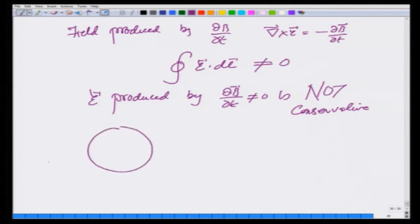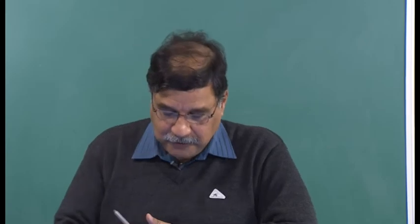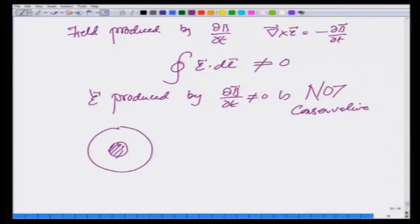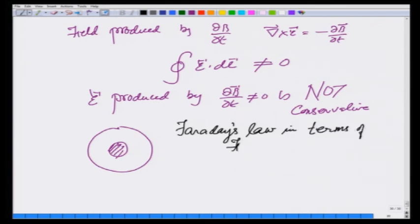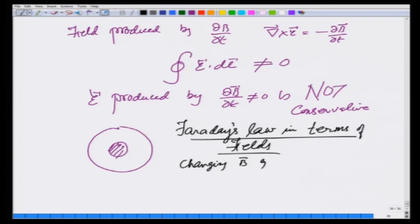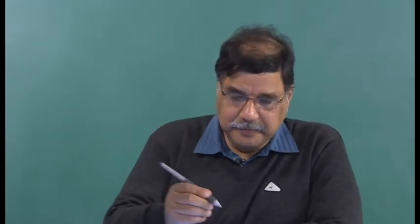That means if I take a circular path around the changing magnetic field, the more I go around the more energy I gain — that is the meaning of non-conservation. If it were conservative, every time I went around the net work done would be zero, but here the more I go around the more energy I gain. This is Faraday's law in field form: changing B gives rise to E, and the equation is curl E equals minus dB/dt. This minus sign comes from Lenz's law — it gives the proper directions when I solve the equation.